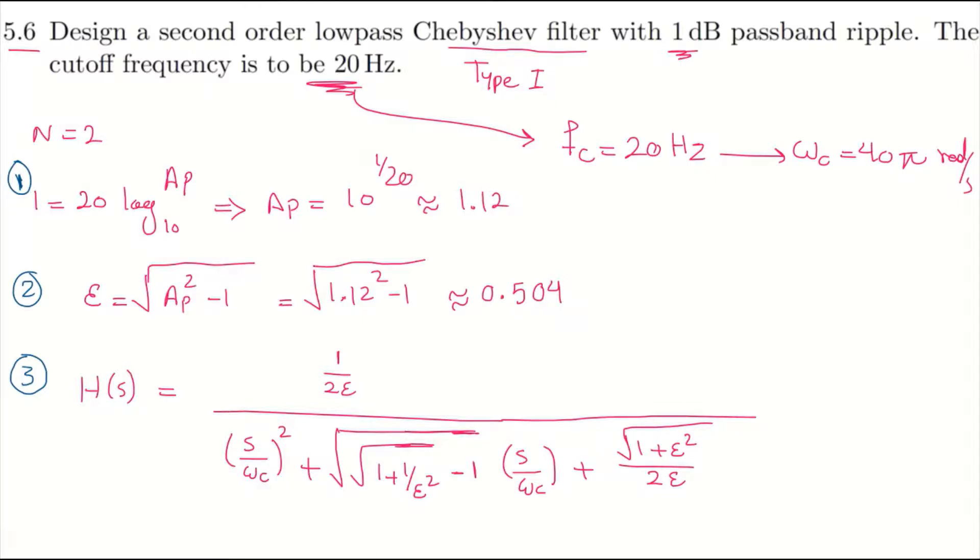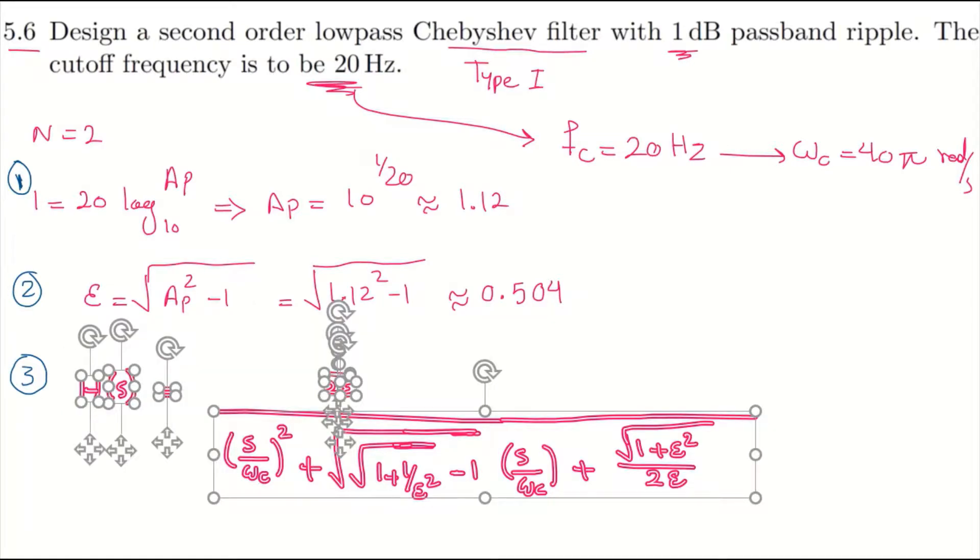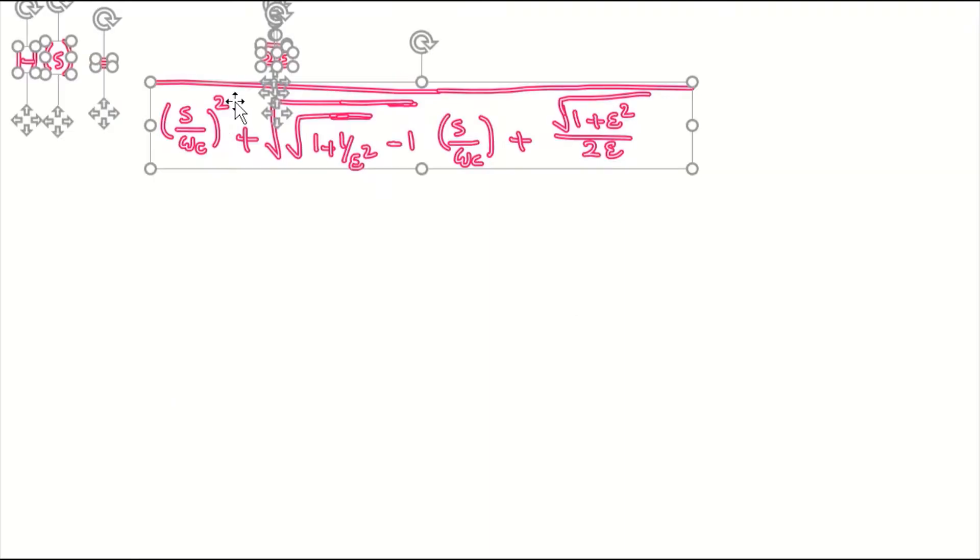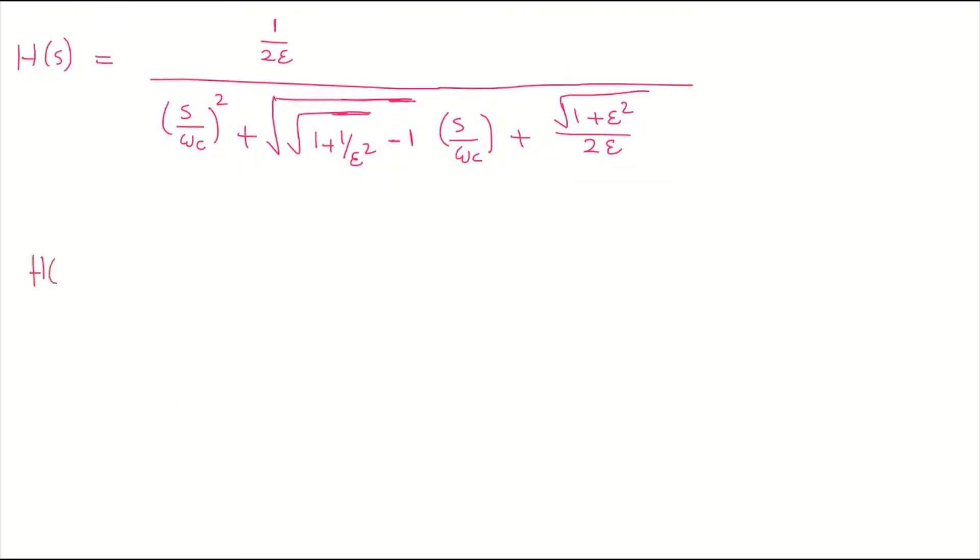In the next slide, we'll copy-paste this part. So here, H(s) is 1 over 2 times 0.504. Then, s over omega_c squared plus square root of 1 plus 1 over 0.504 squared minus 1 times s over, so instead of omega_c we can directly write 40 times pi.